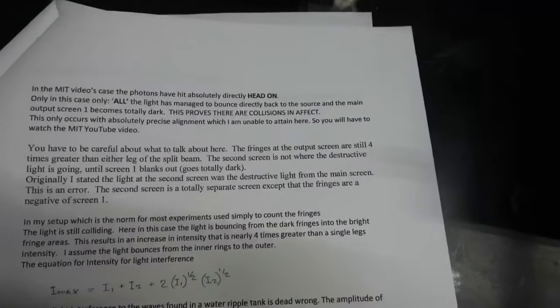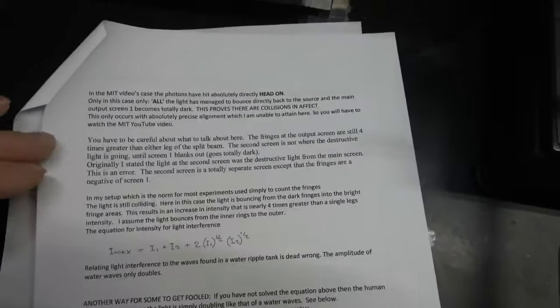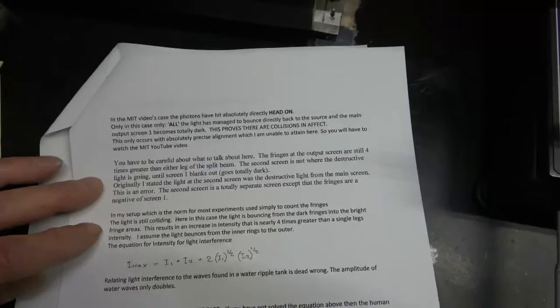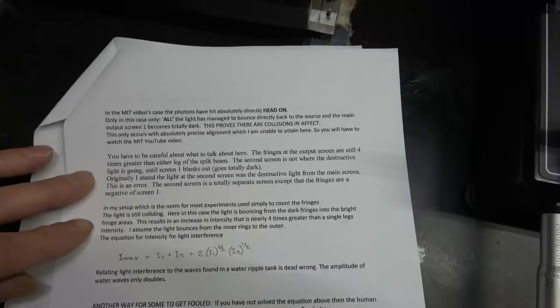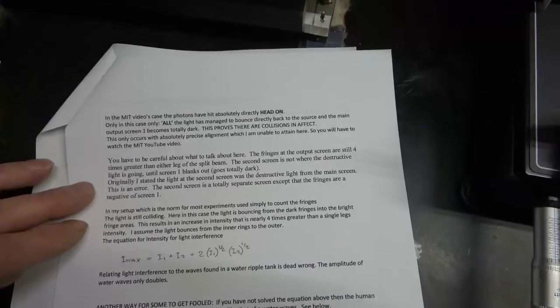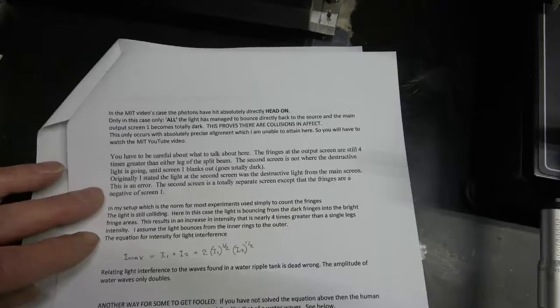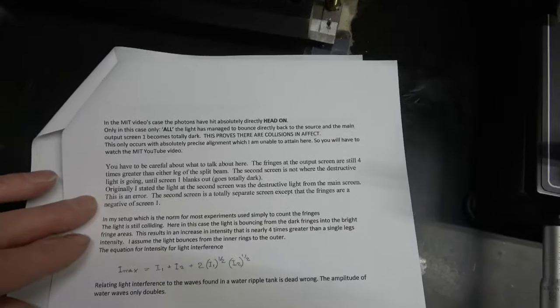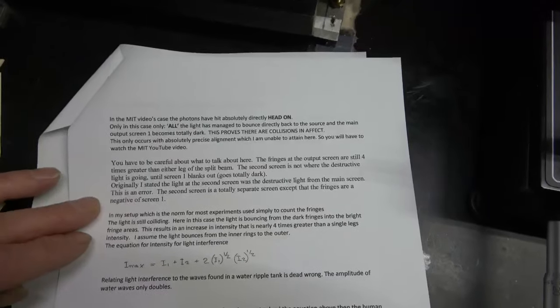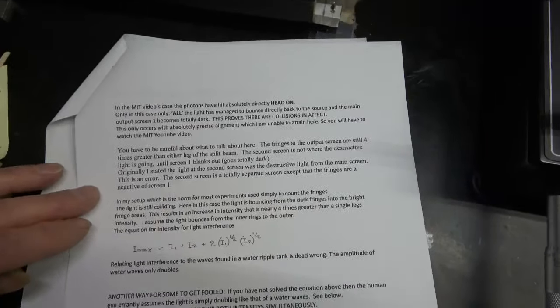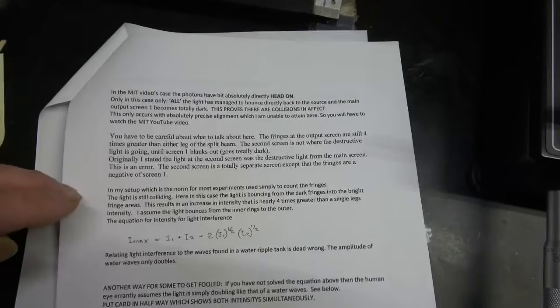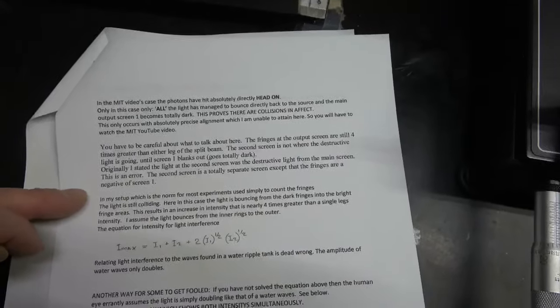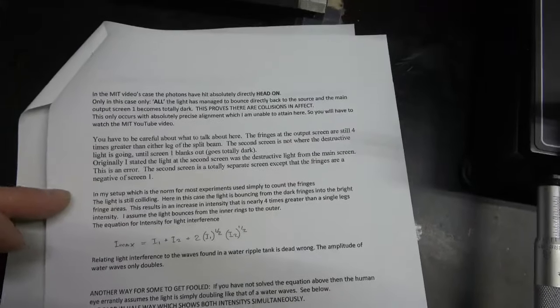You have to watch the MIT video. You have to be careful about what you talk about here. The fringes at the output screen are still four times greater than either leg of the split beam. The second screen is not where the destructive light is going until screen one blanks out, goes totally dark. Originally, I stated that the second screen was the destructive light from the main screen. This is an error. The second screen is totally separate screen, except that the fringes are negative of screen one.